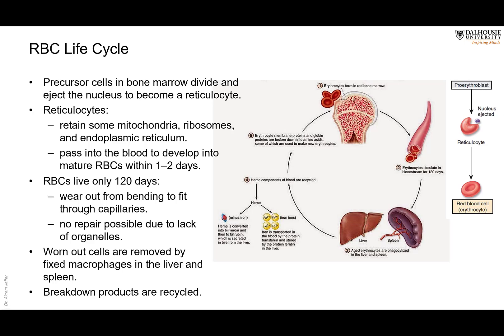The breakdown products of worn-out RBCs are largely recycled. The cell membrane proteins and the globin portion of the hemoglobin molecule are reused for the production of new RBCs. The heme portion of hemoglobin contains an iron ion — there are four iron ions per hemoglobin molecule — and these are recycled back to the liver for reuse.